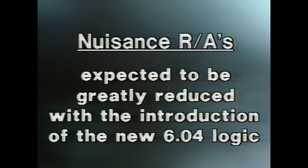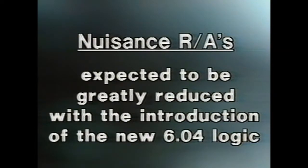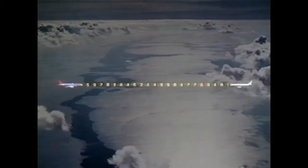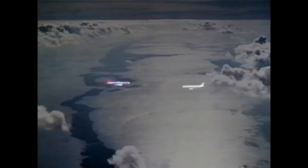Le nombre d'avis de résolution produits durant l'évaluation opérationnelle du TCAS aux États-Unis doit être réduit de façon significative par la mise en place de la nouvelle version 6.04 de la logique TCAS 2. La déviation requise pour résoudre un conflit dans le plan vertical doit être normalement comprise entre 200 et 500 pieds. Si l'intrus est également équipé de TCAS, les systèmes communiquent pour s'assurer que les manœuvres d'évitement sont complémentaires.